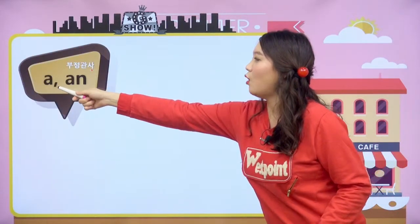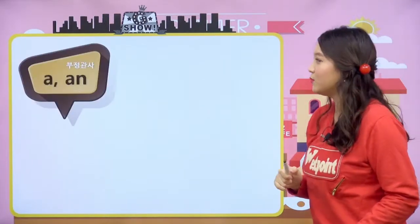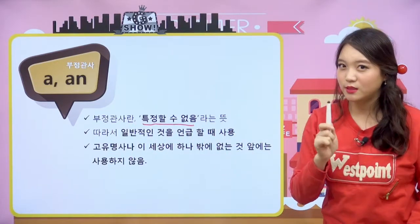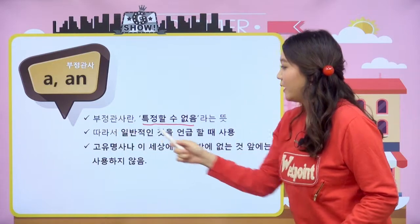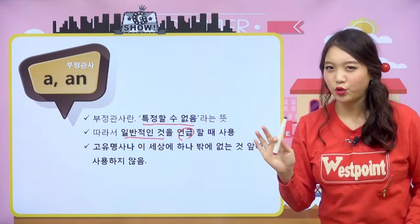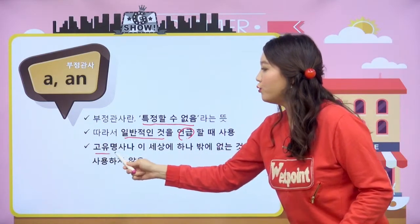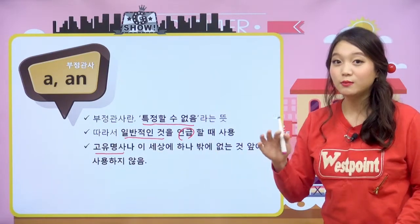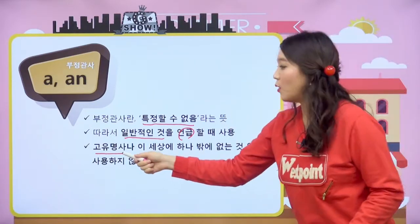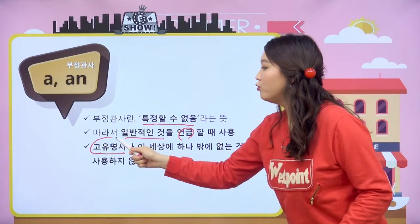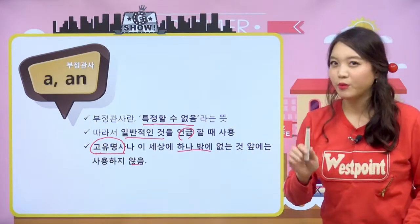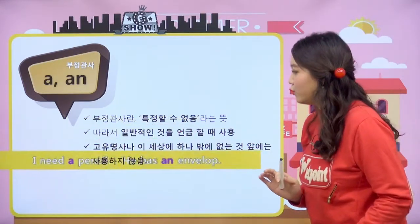그럼 첫 번째 부정관사인 a와 an부터 한번 살펴보도록 할게요. 부정관사란 특정할 수 없음, 즉 정해지지 않았다는 뜻이에요. 그래서 일반적인 것을 언급할 때 사용을 합니다. 이 세상에 하나밖에 없는 고유명사, 예를 들면 이름이나 에베레스트산 같은 대문자로 시작하는 아이들, 이런 고유명사나 유일한 것들 앞에는 사용하지 않습니다.